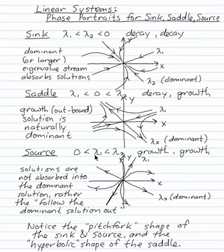In a source, where both eigenvalues are positive, where I have growth on both straight line solutions, every solution is being driven outwards. Solutions are not absorbed into the dominant solution. Let's say lambda 2 is dominant here. They're following the dominant solution out.